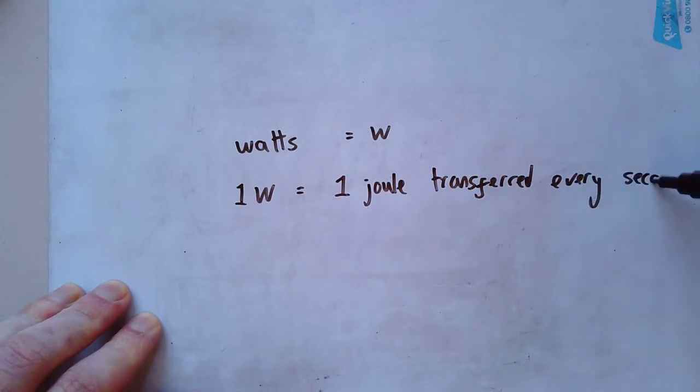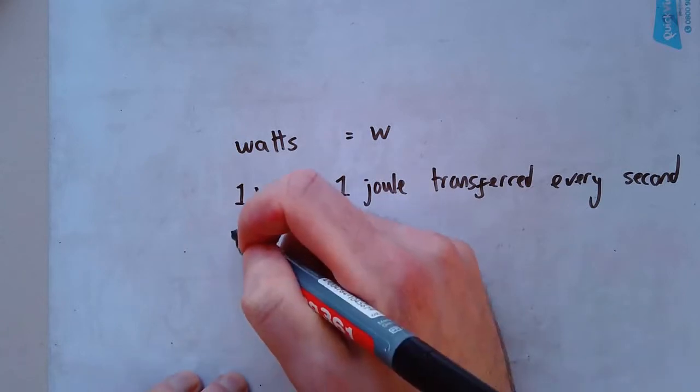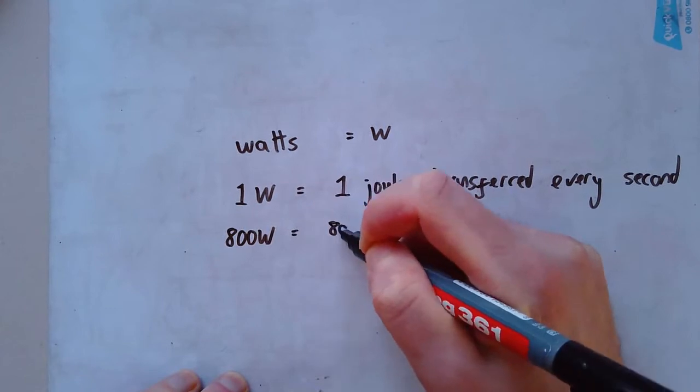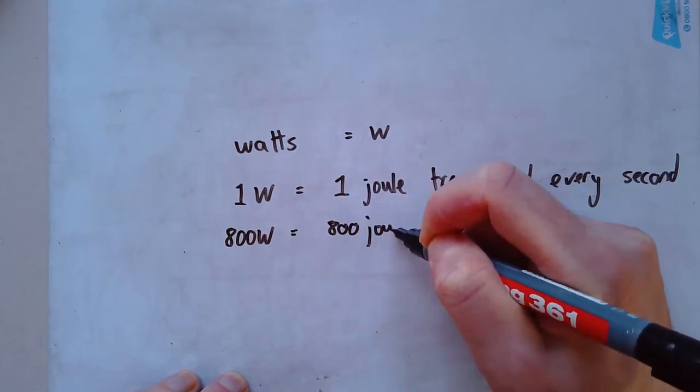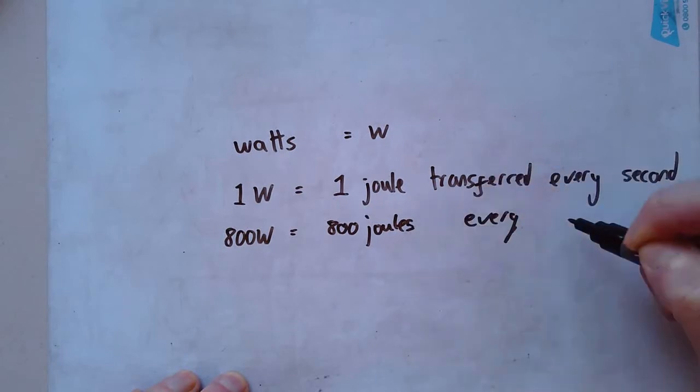So far, so straightforward. That means if I had two watts, that would be two joules transferred every second. 10 watts would be 10 joules transferred every second. So if we go back to my toaster, my toaster is 800 watts. Which means it's transferring 800 joules every second.